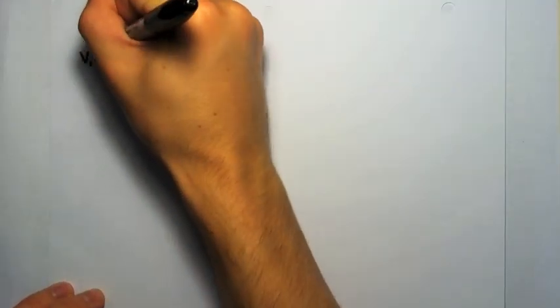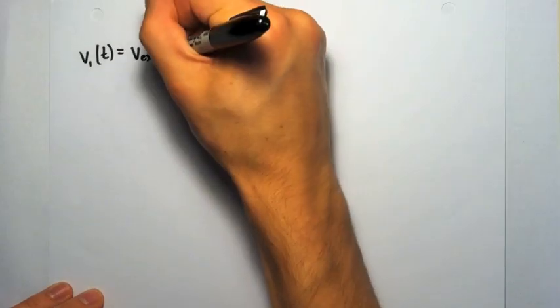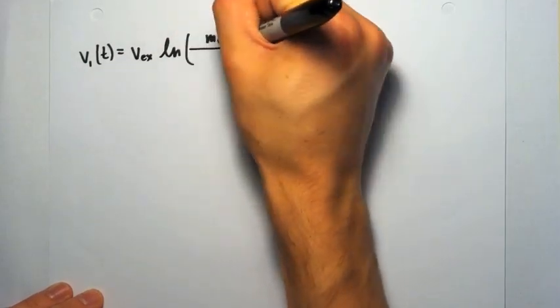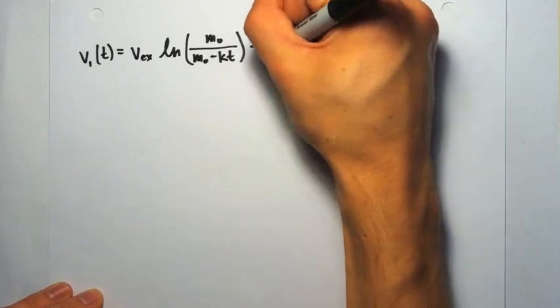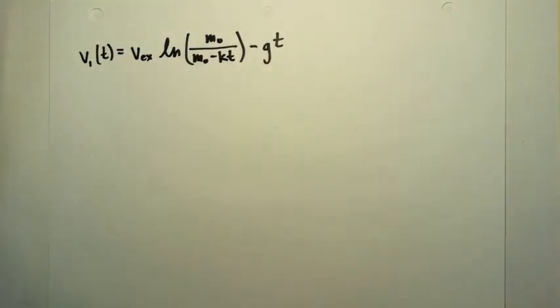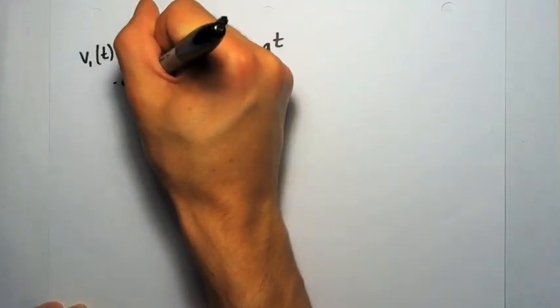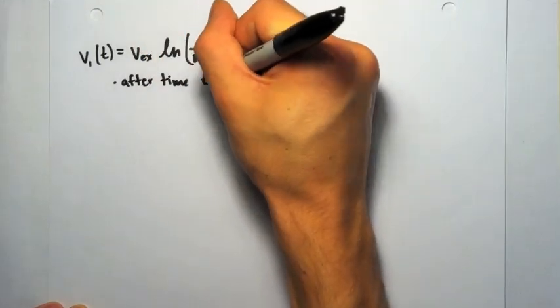Alright, so now we're going to look at the velocity of a three-stage rocket. In the first stage, which is the equation that we just found a second ago, the argument of the natural log, the numerator, is the initial mass of the stage, and the denominator is the mass as a function of time.